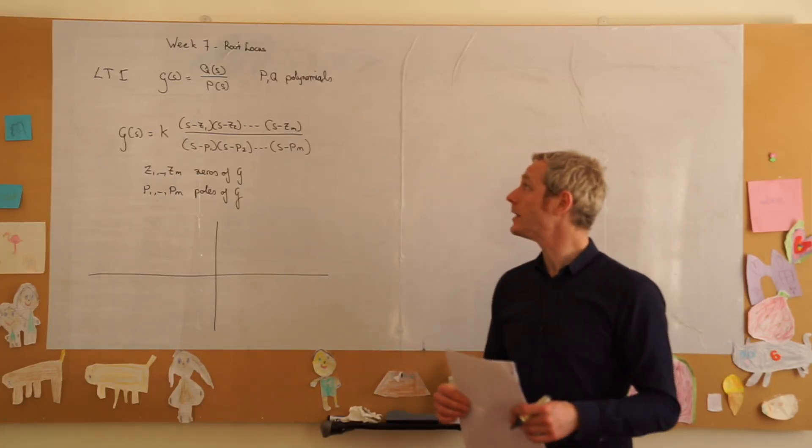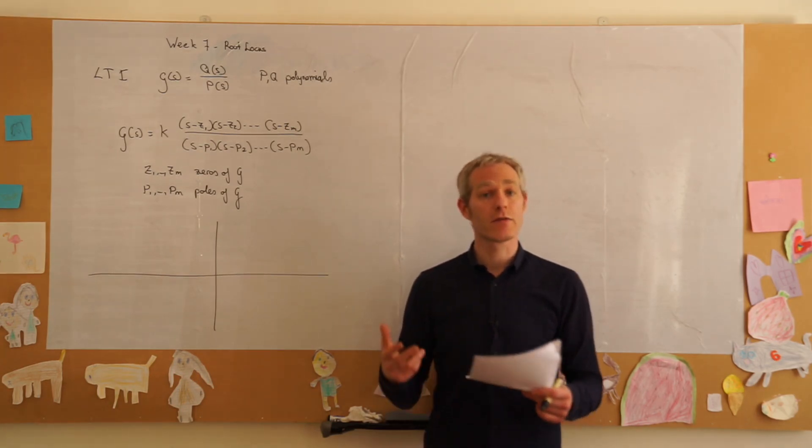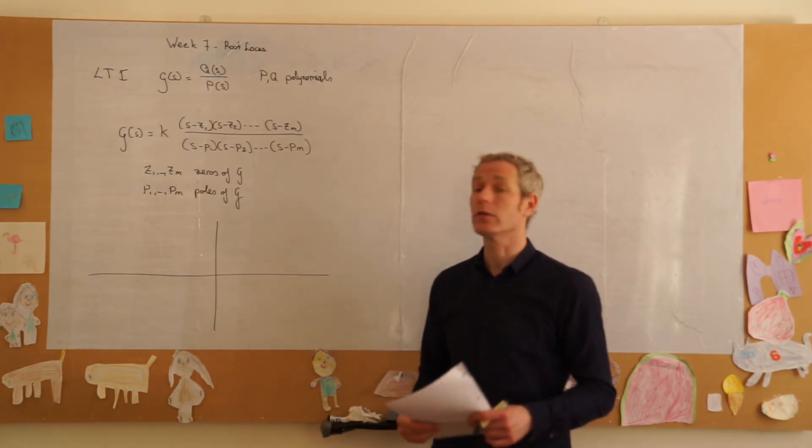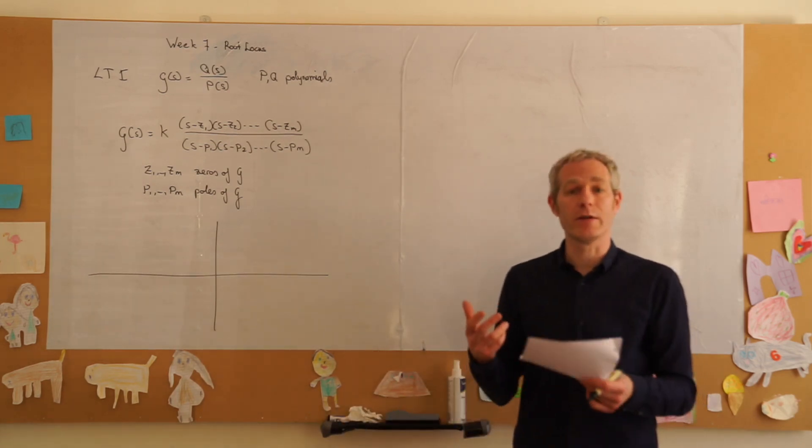Welcome to Automated Flight, week 7, where we will look at a method for control engineering called the root locus method. And we will be using a very simple example to just illustrate what it is.